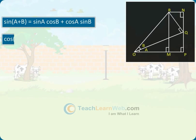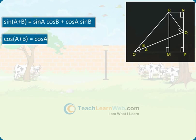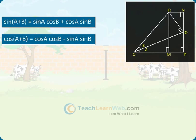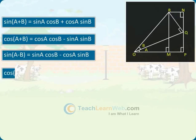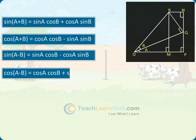cos(A+B) equals cosA·cosB minus sinA·sinB. sin(A−B) equals sinA·cosB minus cosA·sinB. cos(A−B) equals cosA·cosB plus sinA·sinB.